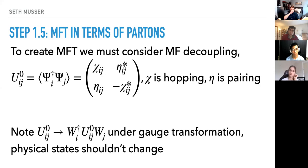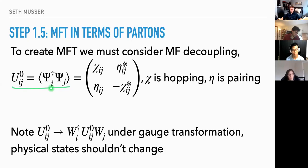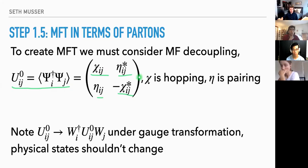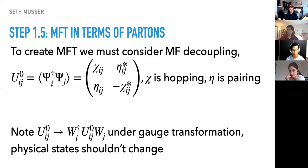To do mean field theory we decouple by replacing things with their expectation values. Using the big matrix of spins, we introduce a matrix of mean field parameters: hopping terms and pairing terms. Writing this out gives standard nearest-neighbor hopping and pairing terms. Importantly, these parameters transform non-trivially under the gauge transformation — but as I said, this doesn't change our physical spin. So somehow we must ensure that when these parameters transform, our physical states don't change.